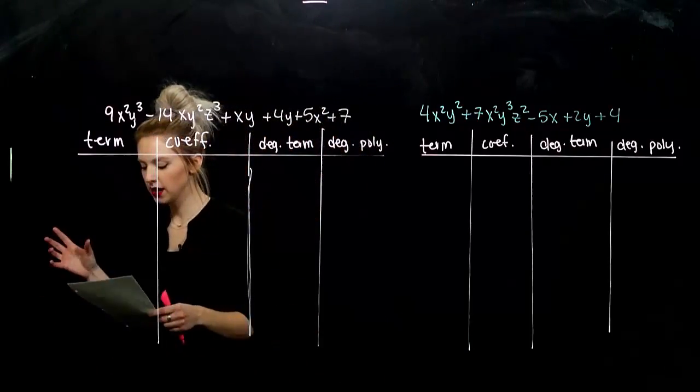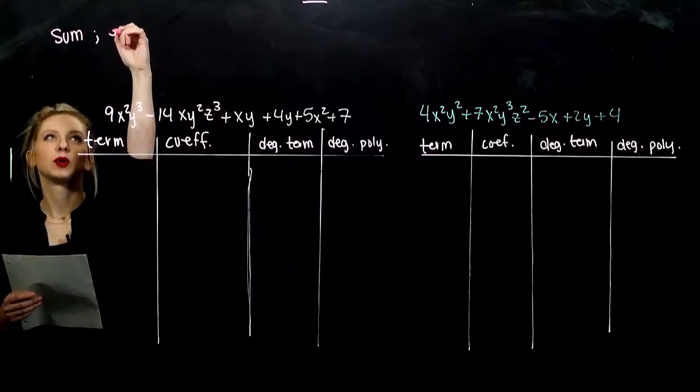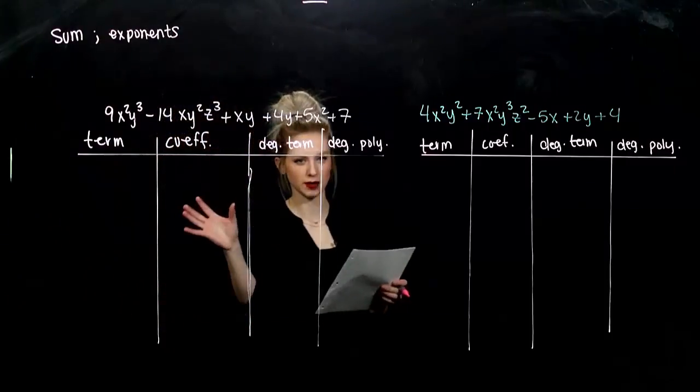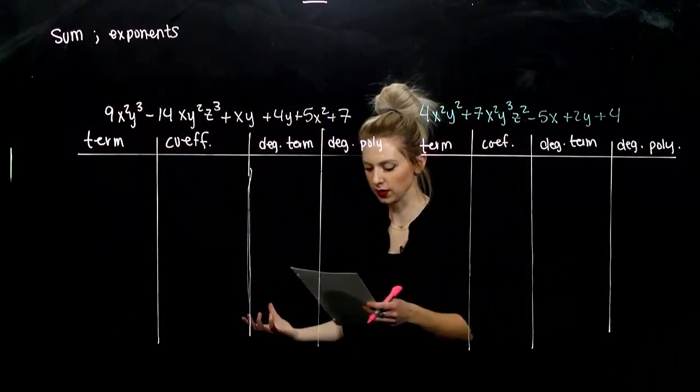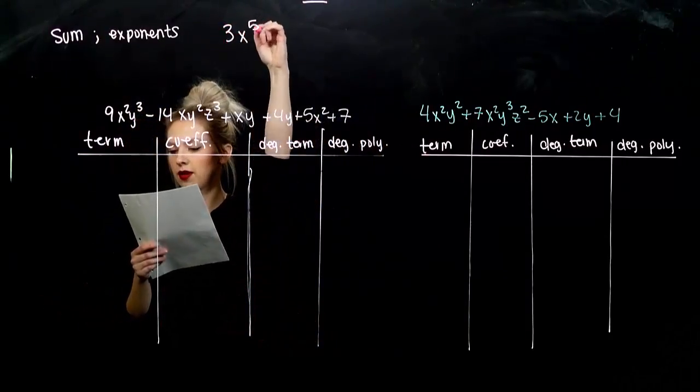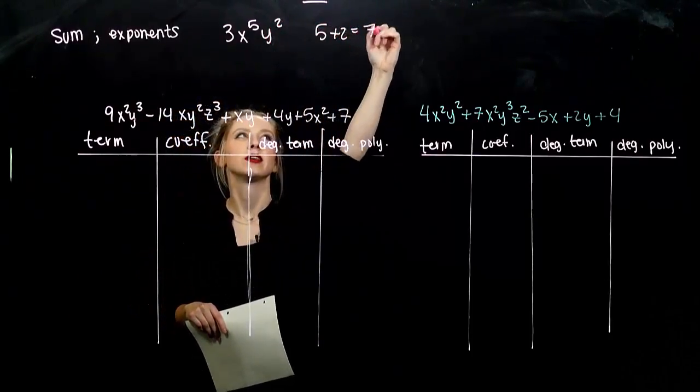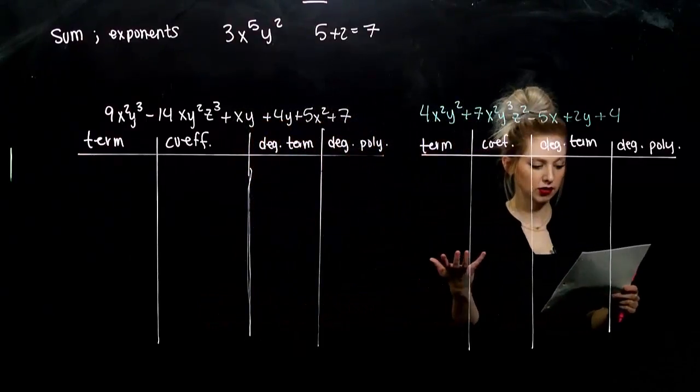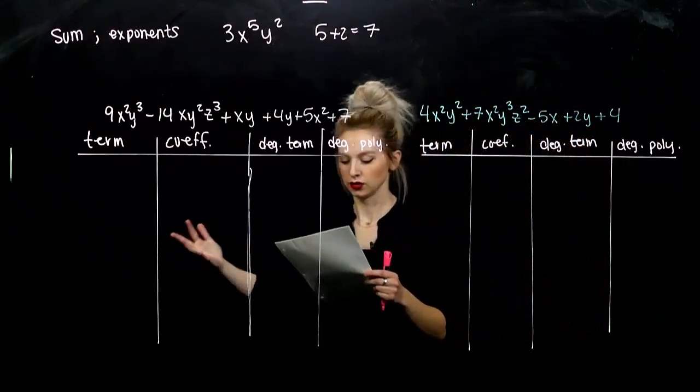So the degree of a term is the sum of all of the exponents. So if we have mixed variables, we need to combine the exponents on each variable to find the degree of the term. So for example, the degree of 3x to the fifth y squared is going to be what? Adding together 5 and 2, that term has degree 7. Then again, the degree of a polynomial is the degree of the term of highest degree.